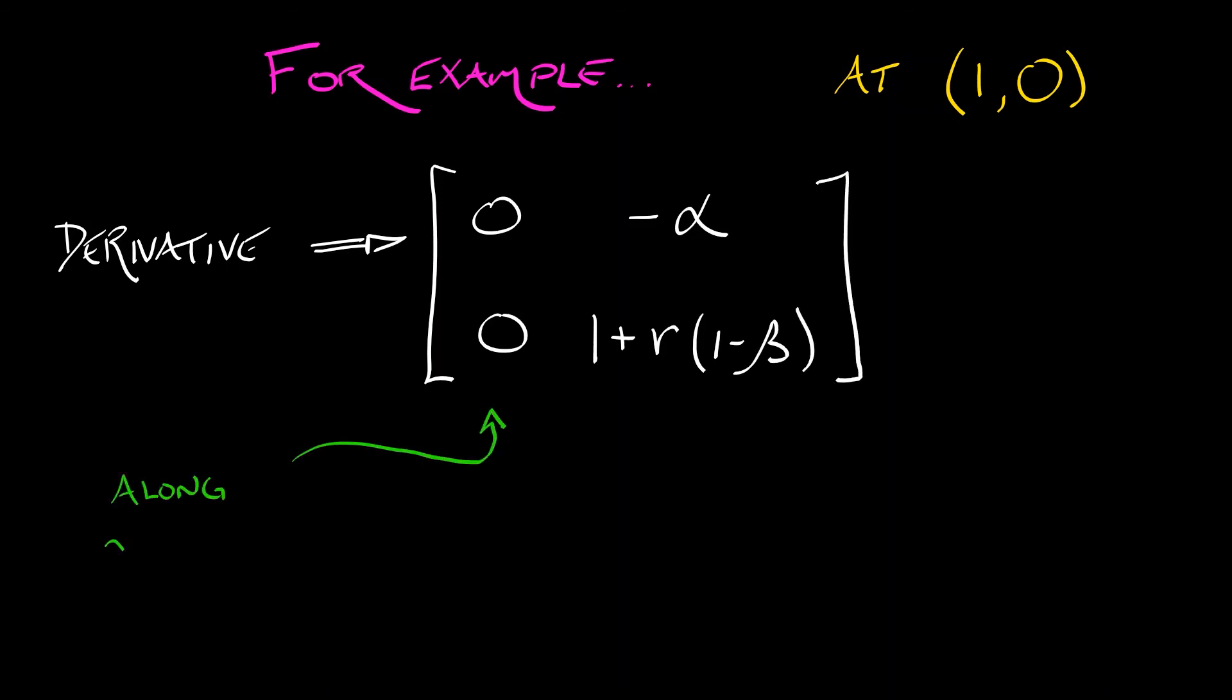Interpreting this, what we see is that along the x-axis, everything is super stable. We have a 0 eigenvalue with an eigenvector of (1, 0). What happens with the other eigenvalue depends on beta.